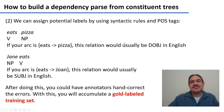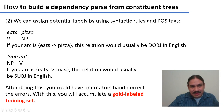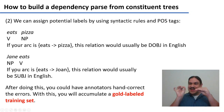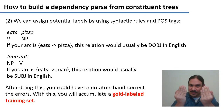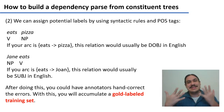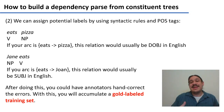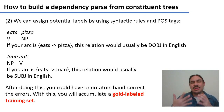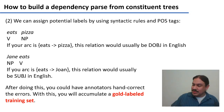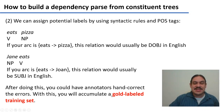We make a program that tentatively labels such a configuration as a direct object. Likewise, if the arc goes from 'eats' to 'jane' and the word order is noun-verb, that structural relationship in English is usually a subject, so we tentatively label it as a subject. We make rules for each label we want, do our best, and then give the output to human workers who correct mistakes, telling us which labels worked and which didn't. We then refine the program, and in the process collect a gold-labeled training set of things we know are correct.